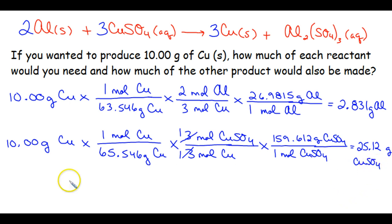Alright, and then the last part of the question was how much of the other product would also be made. So again, you're stoic-ing from your given. And 3 moles of copper on the bottom and 1 mole of aluminum sulfate on top.